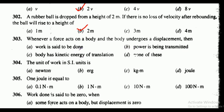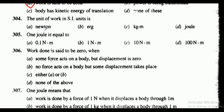Question 303: whenever a force acts on a body and the body undergoes a displacement, the correct answer is option A — work is said to be done. Question 304: the unit of work in SI units — the correct answer is option D, that is joule. Question 305: one joule is equal to — the correct answer is option B, that is 1 newton meter.